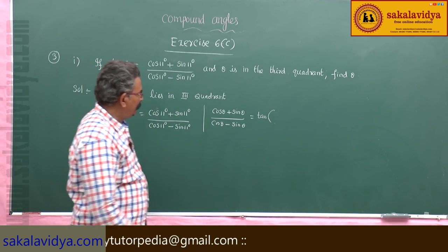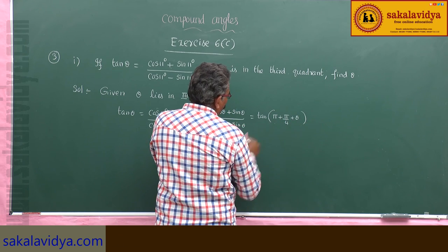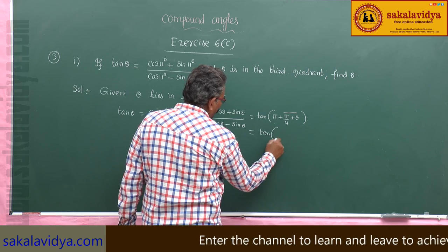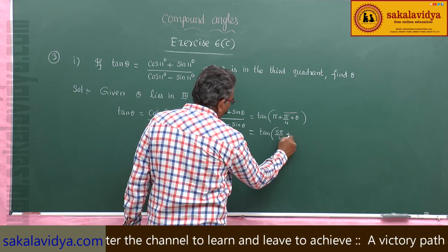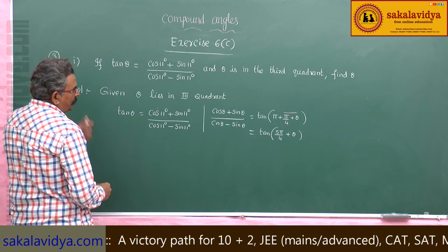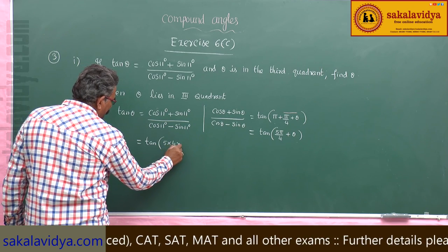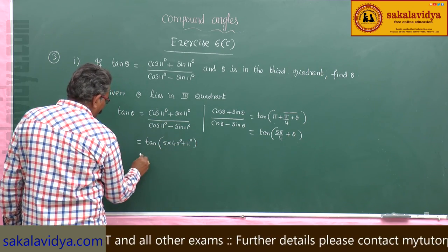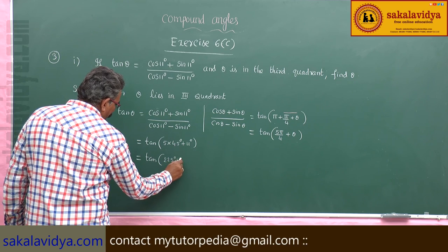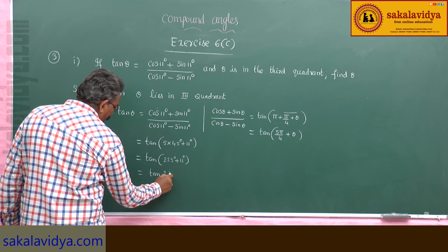Since it lies in the third quadrant, we can write tan of pi plus pi by 4 plus theta. This can be written as tan of 5 times 45 degrees plus 11 degrees, which equals tan of 225 plus 11 degrees, giving us tan of 236 degrees.